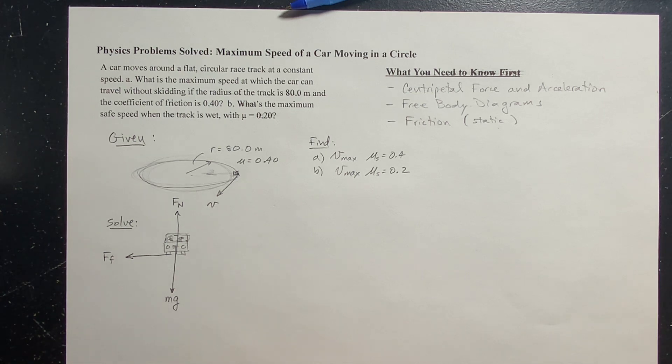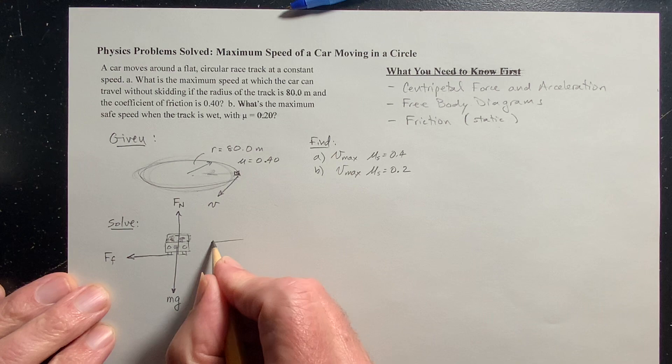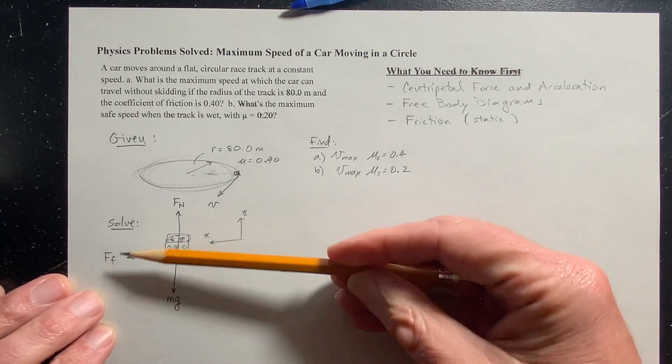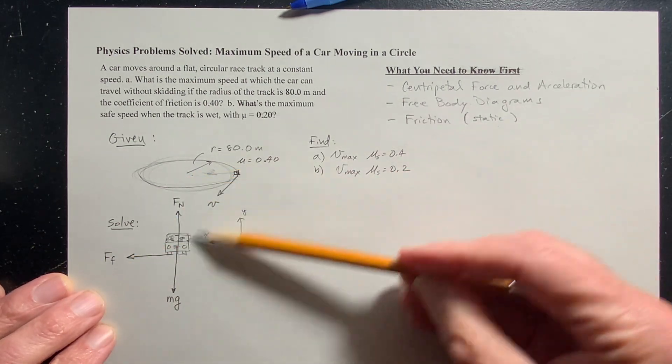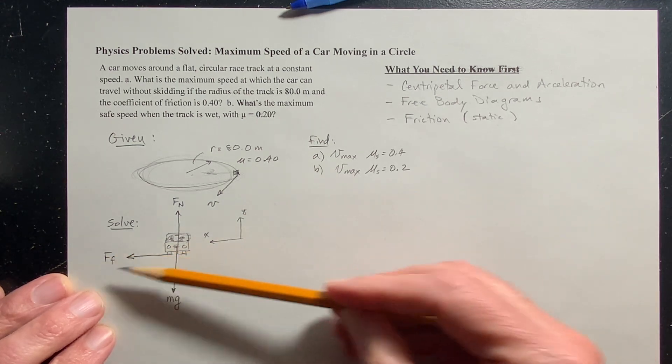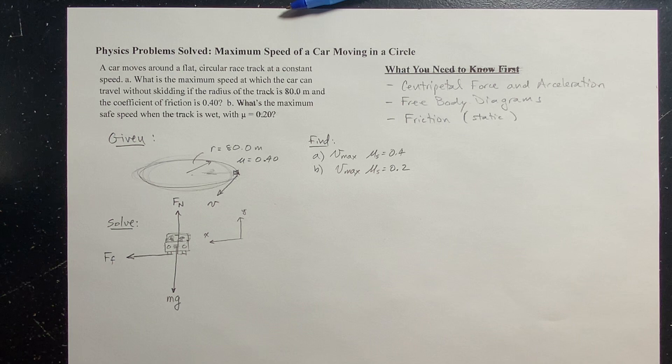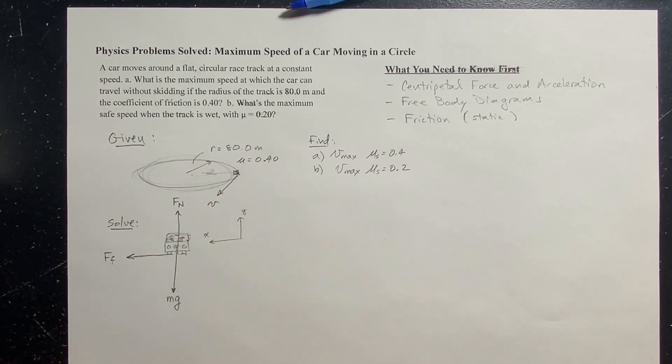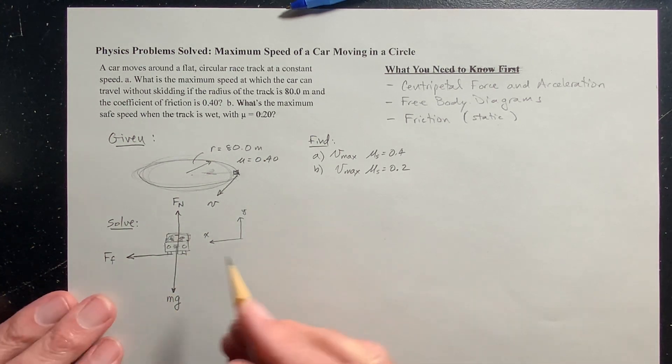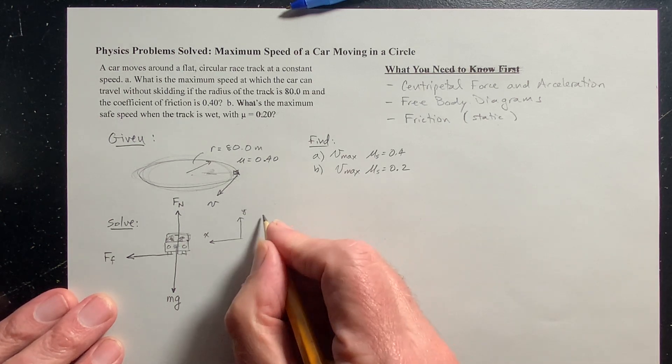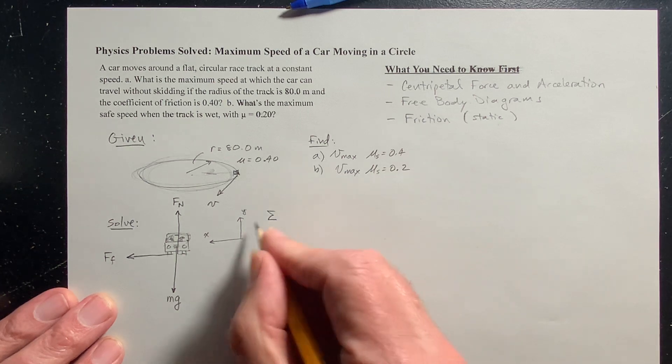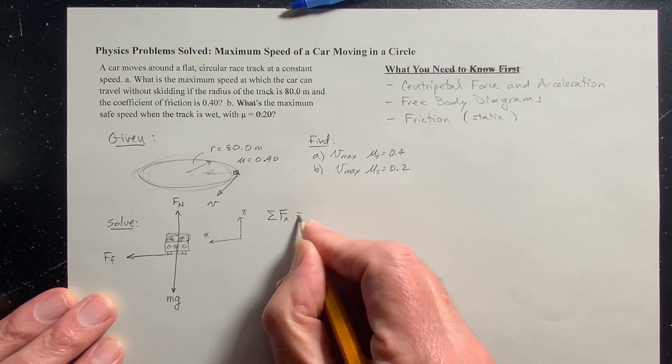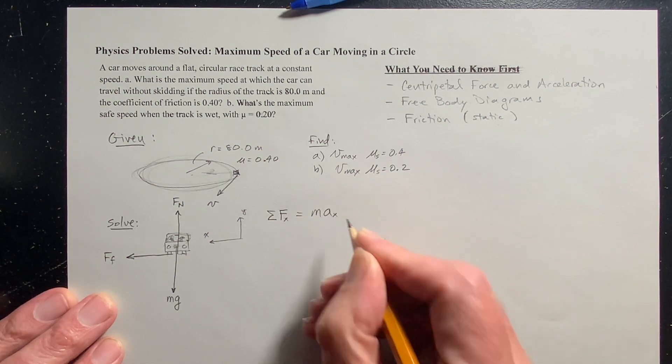I'm going to define positive x to be in this direction and positive y to be in this direction. I know that the acceleration has to be towards the center of that circle. If I know the direction of the acceleration, I usually make that a positive axis direction. So if the acceleration is to the left, I make to the left positive x. Now I'm going to apply Newton's second law, which is if I add up all the forces in the x direction, that should equal the mass times the acceleration of the car in the x direction.